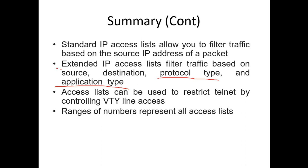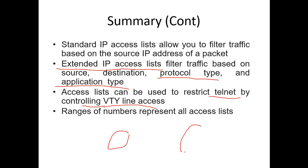Access lists can also be used to restrict network connections to another network, such as controlling VTY line access. For example, if you have two different networks and want to block all traffic from one side to the other, you can apply filtering on the router between them.